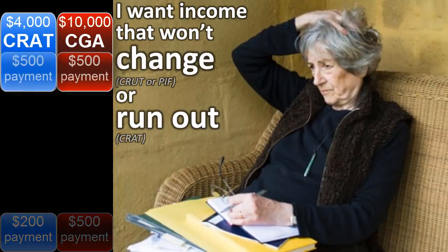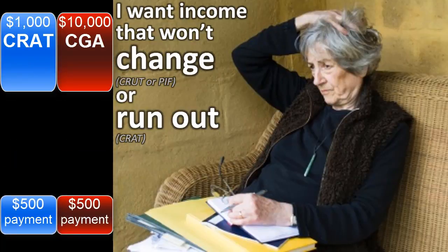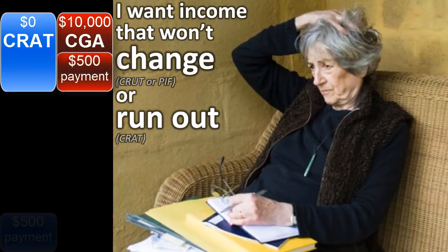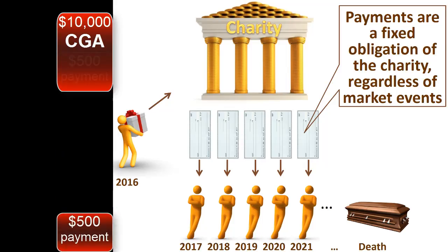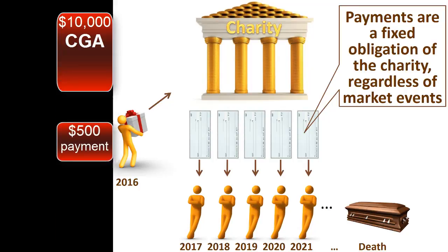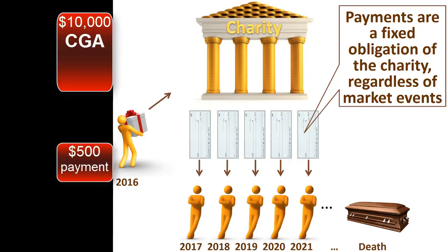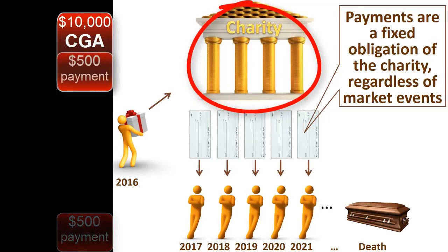A charitable remainder annuity trust makes fixed payments for life. However, if the investments in the charitable remainder annuity trust perform poorly, the trust can run out of money, causing the annual payments to stop. In contrast, the charitable gift annuity payments are a fixed obligation of the charity, which must be paid regardless of investment returns or market events. So long as the charity continues to exist, the gift annuity payments must be made.